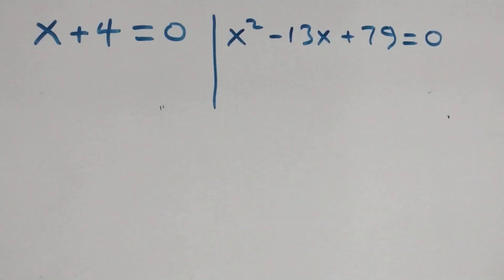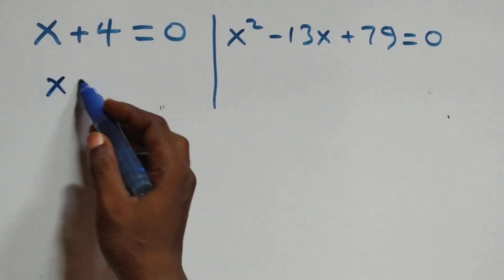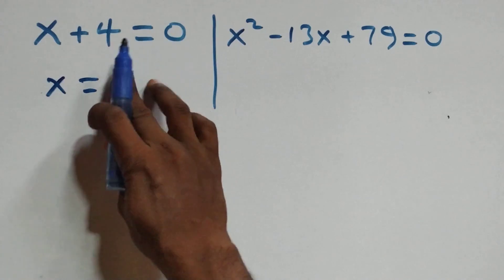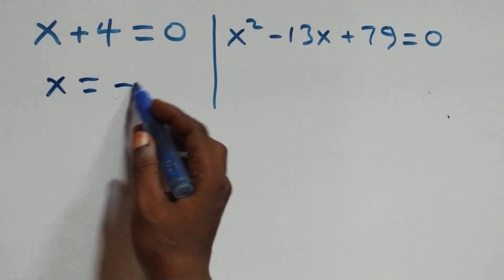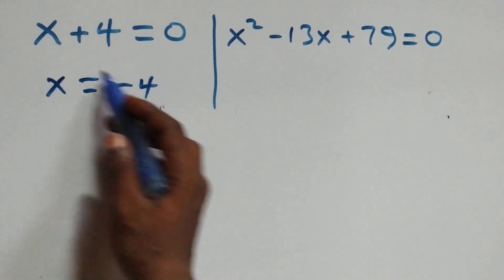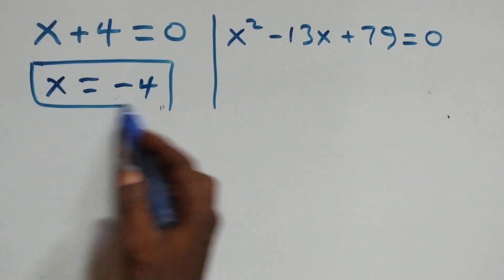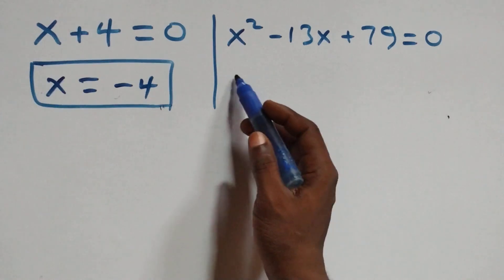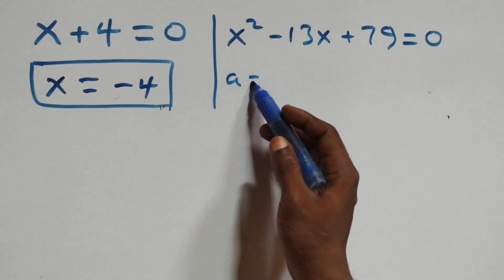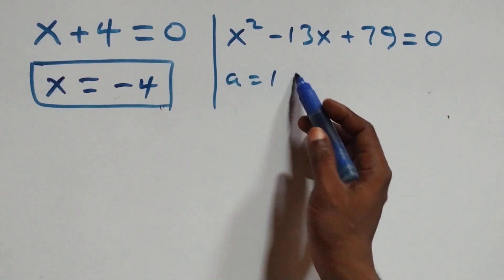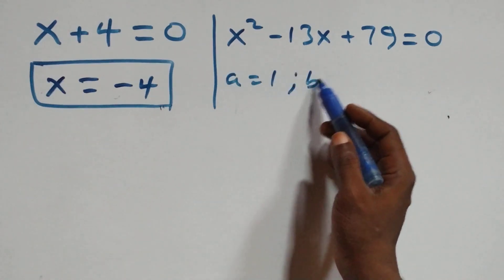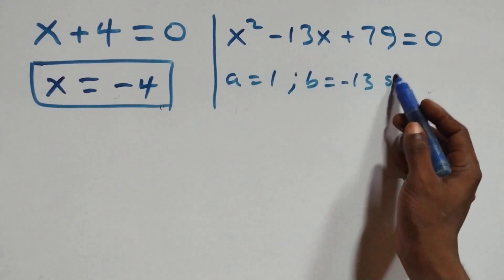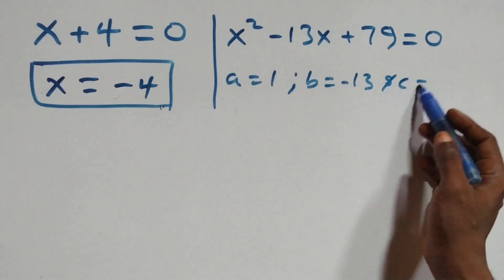From x plus 4 equals to 0, we have x equals to minus 4, which is a real solution. Then for the quadratic equation x squared minus 13x plus 79 equals to 0, we have a equals to 1, b equals to minus 13, and c equals to 79.